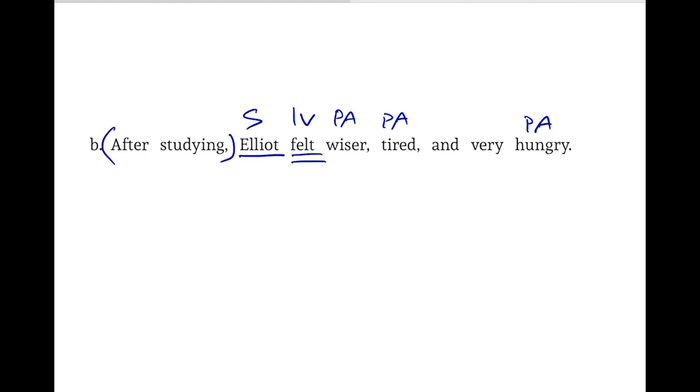What do we learn about Eliot? We learn that he is wiser, tired, and hungry. He felt wiser, tired, and hungry — these things characterize him, they're linked to him. Hence, 'felt' is a linking verb.